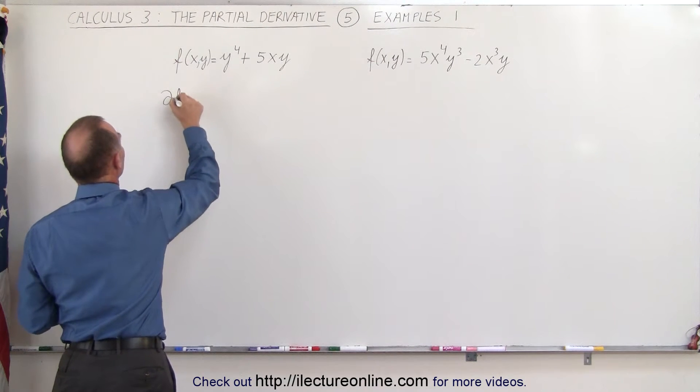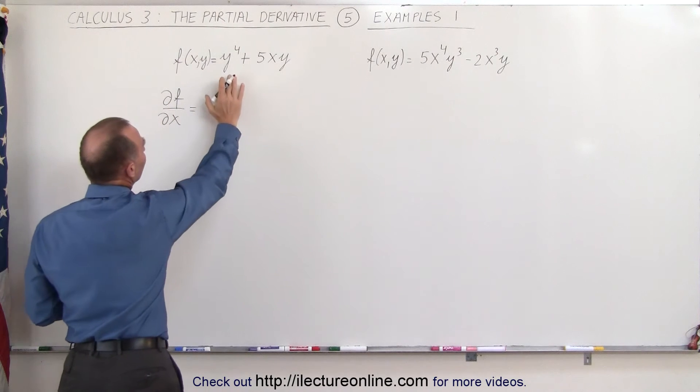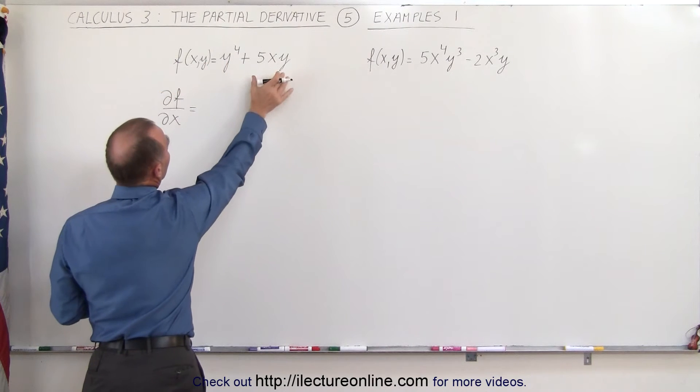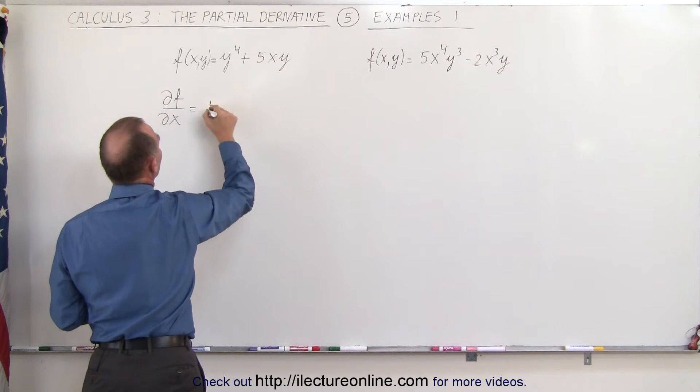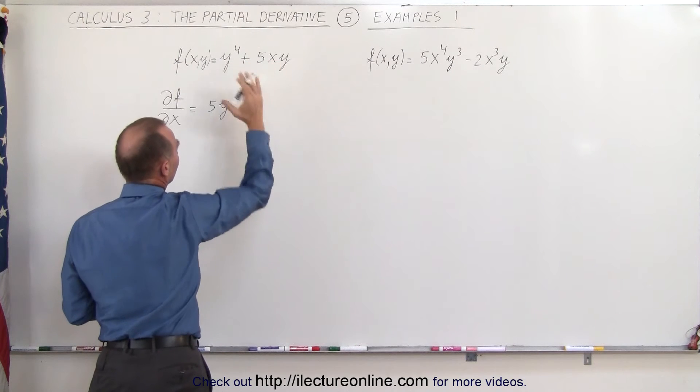So the partial of the function with respect to x is equal to... Notice that in this case y to the 4 becomes a constant, so the derivative of a constant is 0. And here notice that only x is the variable, 5 and y remain as the constant, so we get 5 times y and the derivative of x with respect to x is simply 1.